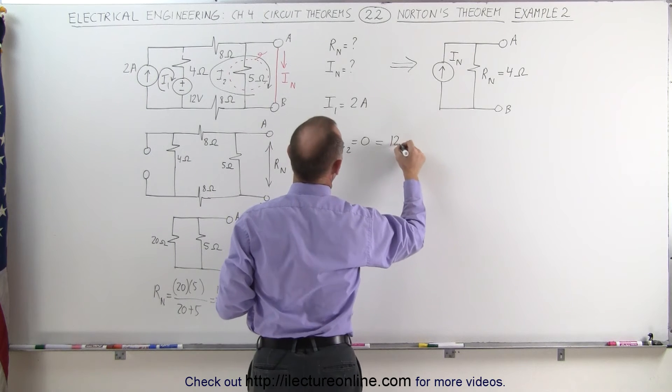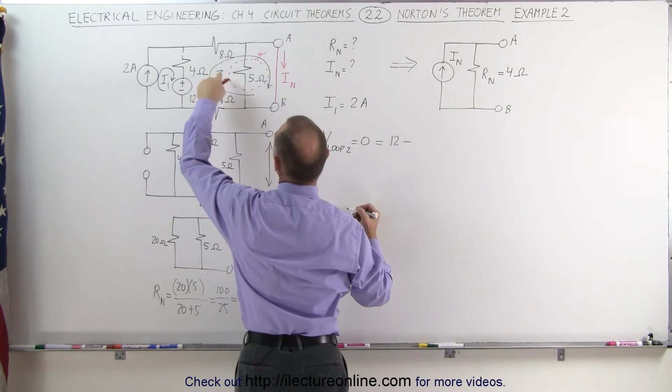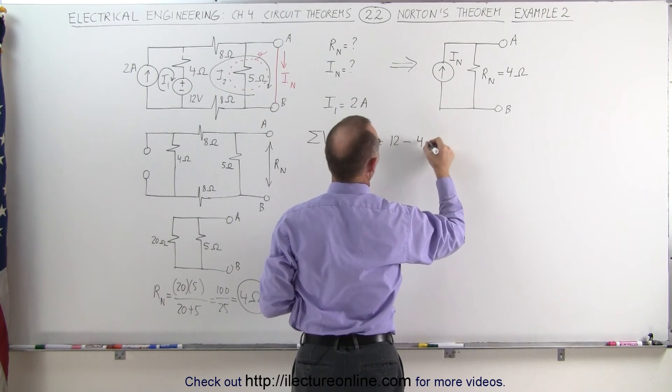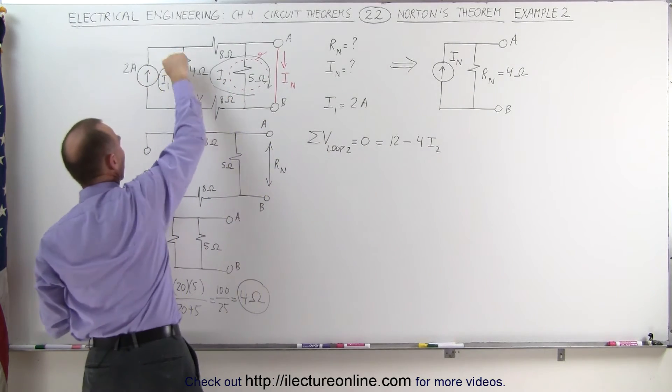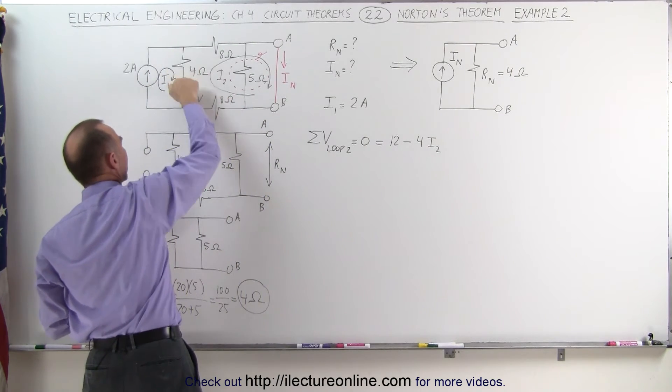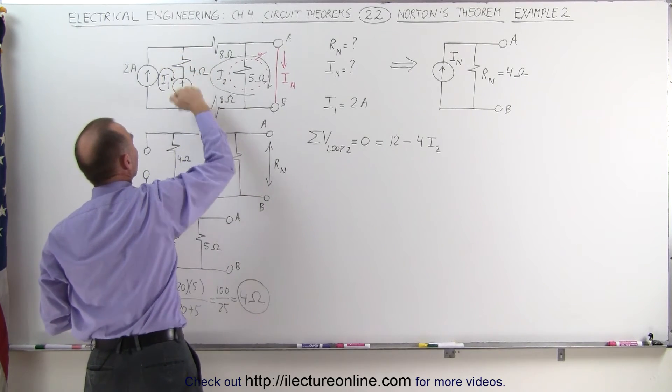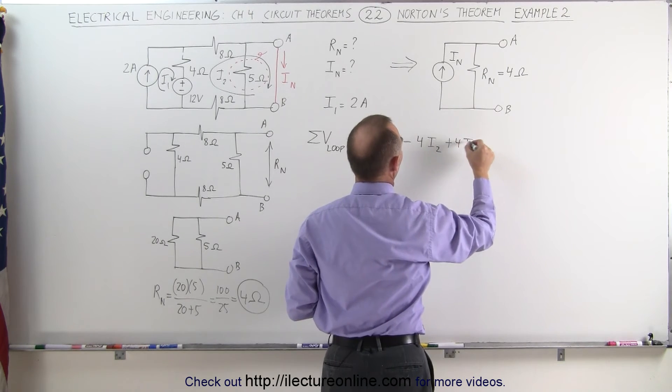Plus 12 volts minus the voltage drop across the 4 ohm resistor which would be I2 times 4 ohms. That's minus 4 I2. But we go against the current of I1 because I1 is clockwise here. It goes down in this branch. We go against the current I1. That's the voltage rise. Plus 4 I1.